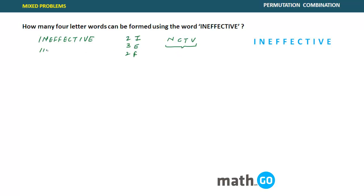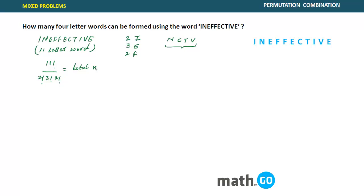This is an 11-letter word. If we were asked for the total permutations using all 11 letters, the answer would be 11! divided by 2! for I, divided by 3! for E, and divided by 2! for F. That is the total number of 11-letter words.